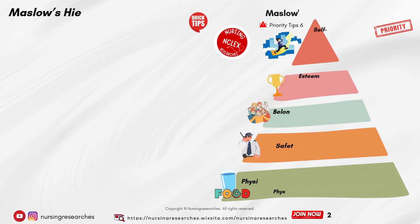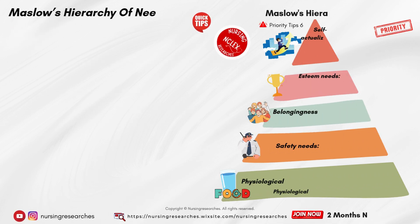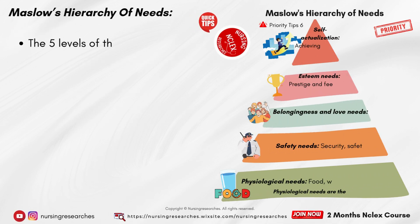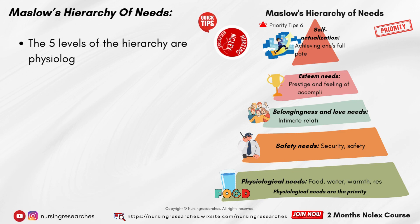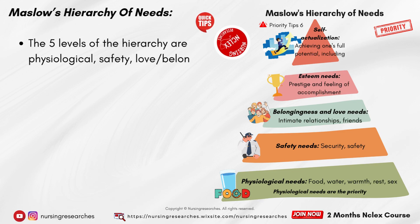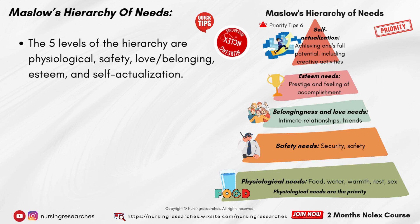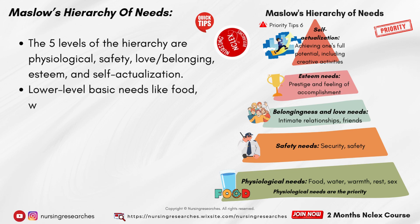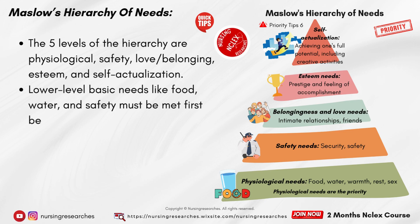Maslow's hierarchy of needs. The five levels of the hierarchy are: physiological, safety, love, belonging, esteem, and self-actualization. Lower-level basic needs like food, water, and safety must be met first before higher needs can be fulfilled.